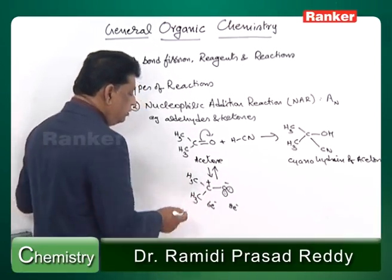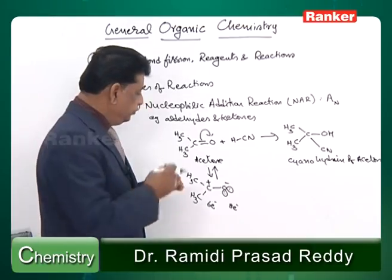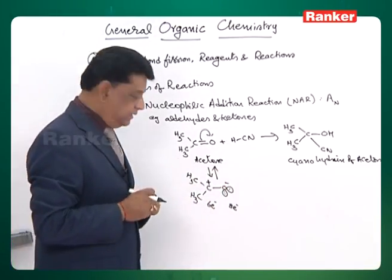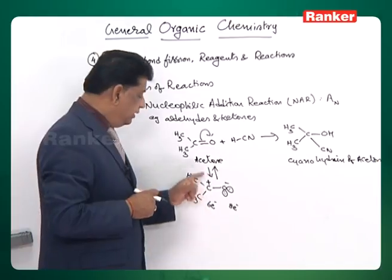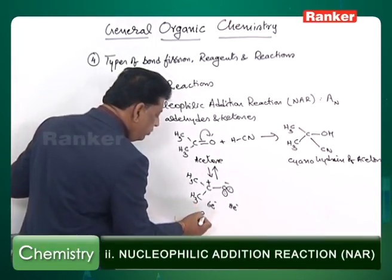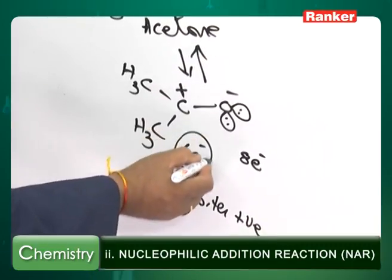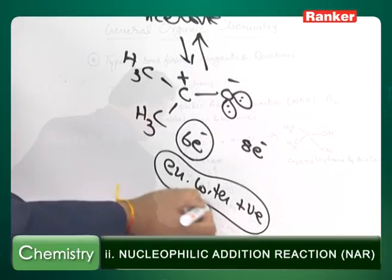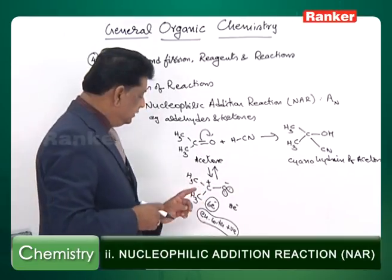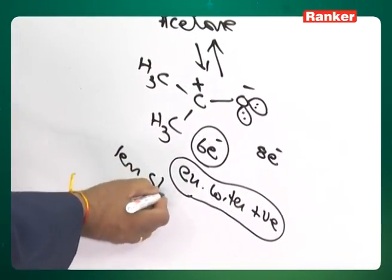Both carbon and oxygen are electronegative elements in the upper right of the periodic table. An electronegative element becoming negative is stable. But carbon is also electronegative and has become positive, so it is destabilized — more reactive. An electronegative element with a positive charge is destabilized.